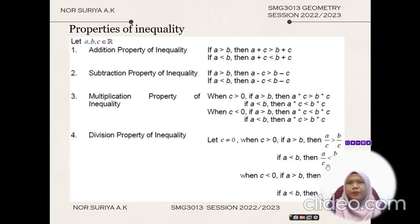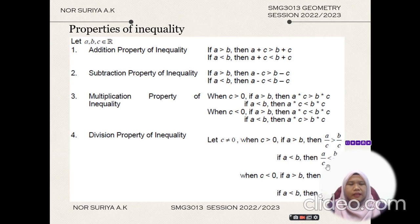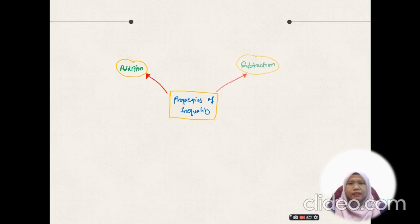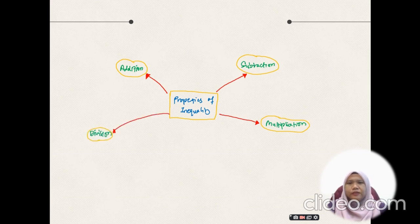Class, next we are going to look into properties of inequality. Let's do a mind map of it. For the properties of inequality, the first property is the addition property of inequality, subtraction property of inequality, multiplication property of inequality, as well as division property of inequality.